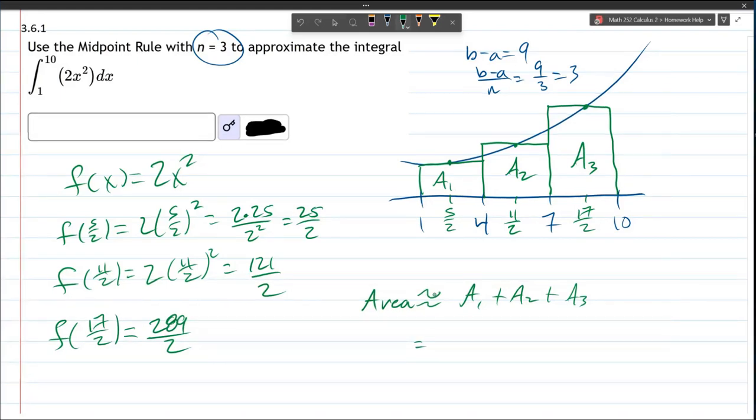All right. What is a1? These are all rectangles. So, it's base times height. All of our bases are 3. Now, the heights are what we just computed.